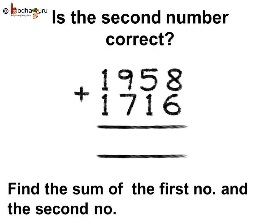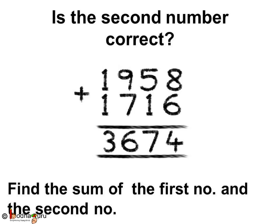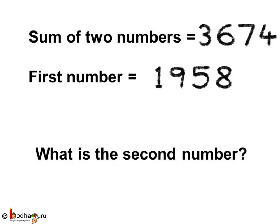Now, if you wish to know if the second number obtained was correct or not, just add the first number and the second number which we have found. After adding, we get the answer as 3,674. This is the same as the sum of two numbers given in the initial problem, which means we got the correct second number.